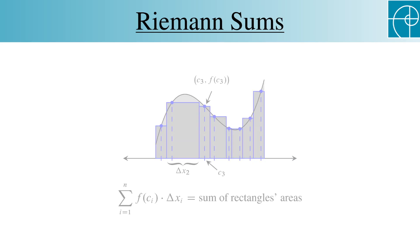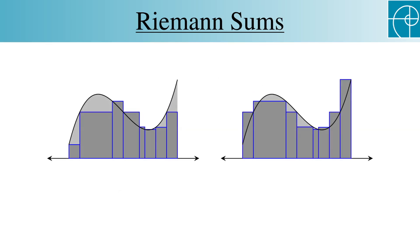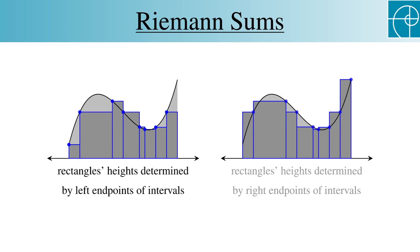Two of the most common types of Riemann sums are those that use the left or right endpoints of each subinterval as points to determine the height of the rectangles. In the graph on the left, the left endpoints are used, and in the graph on the right, the right endpoints are used. Although these are very common and very useful for computation, they're not the most useful conceptually. That distinction belongs to the following two types.